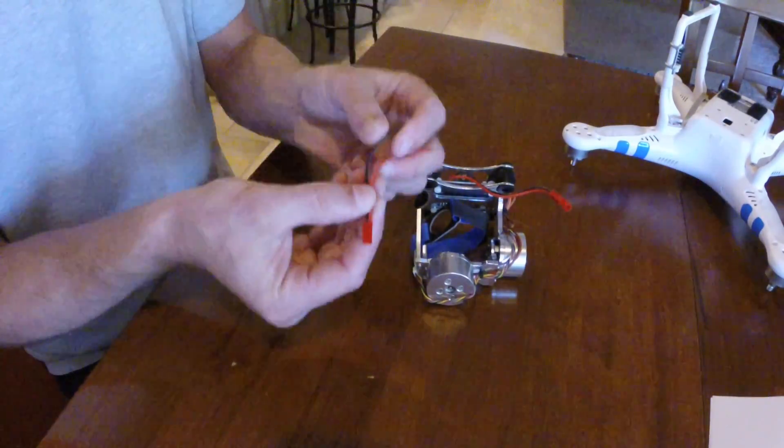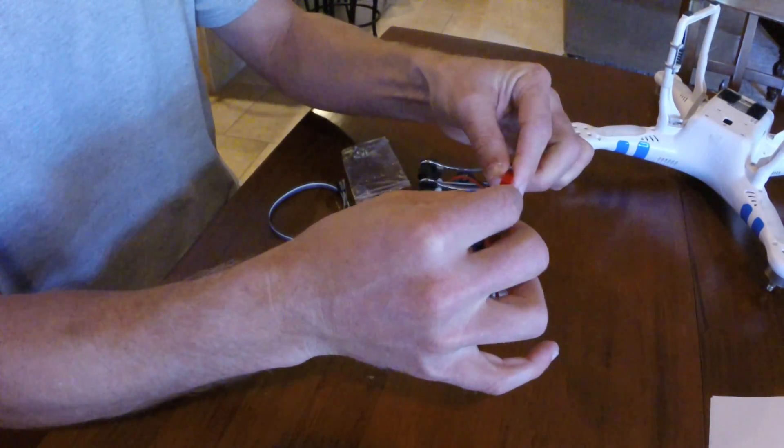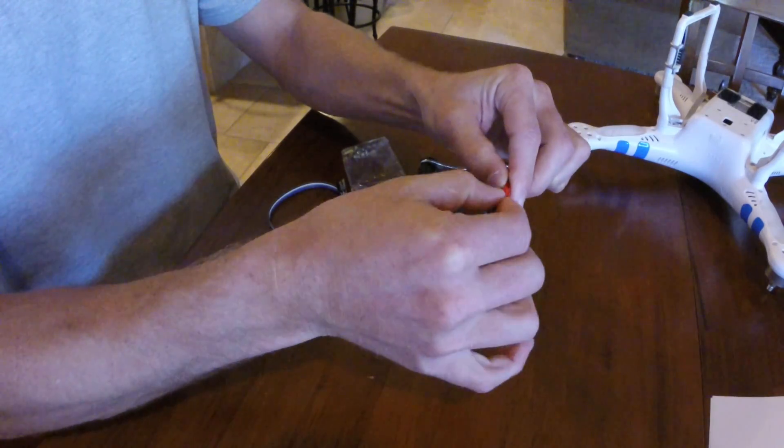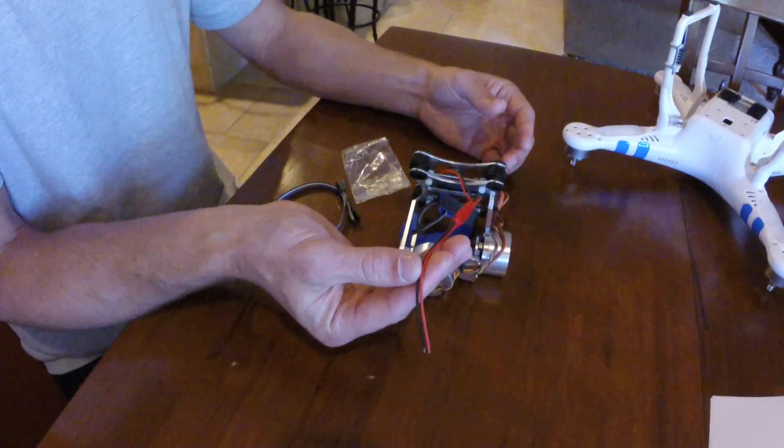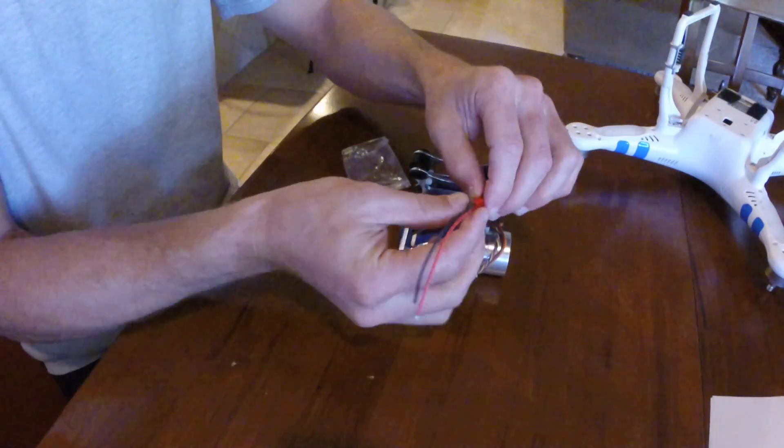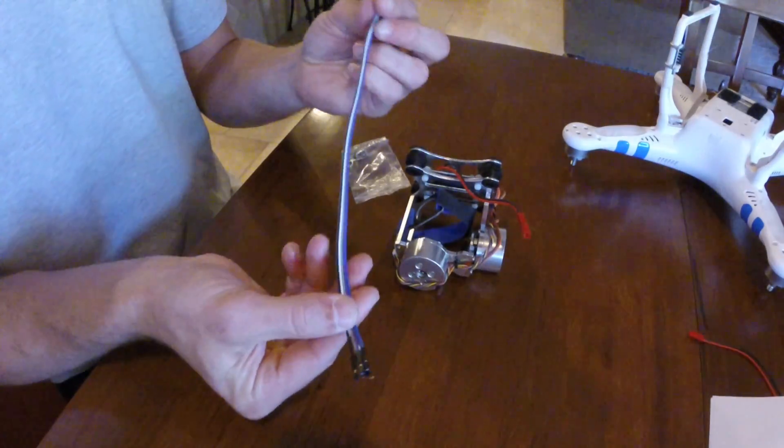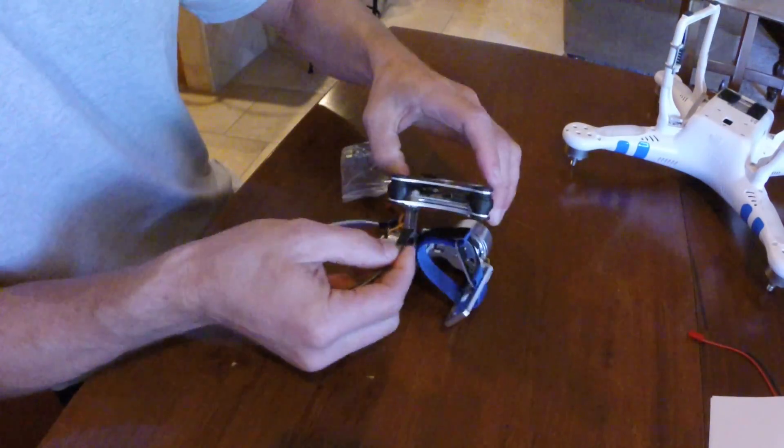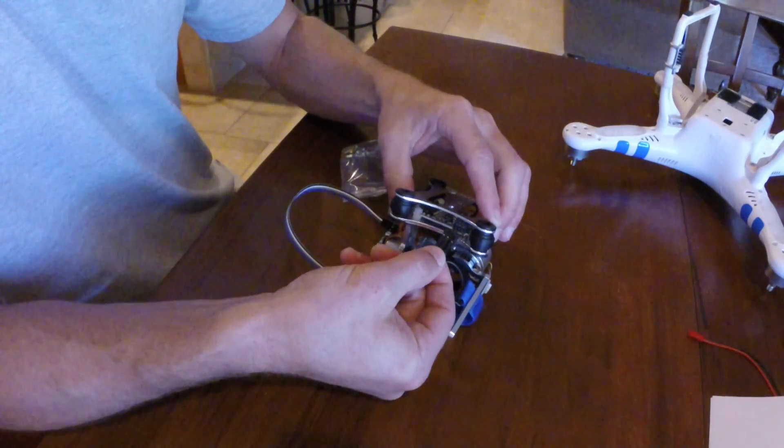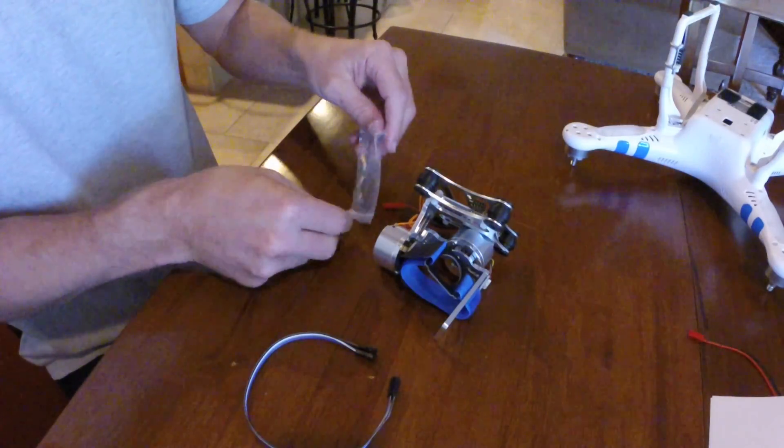So what you should have in your bag is the power cord which will connect to the gimbal as well as to your Phantom's power source. You'll also have a set of wires that connects to the gimbal that can control the pitch and roll, and left over you should just have a bag of screws to attach the gimbal.